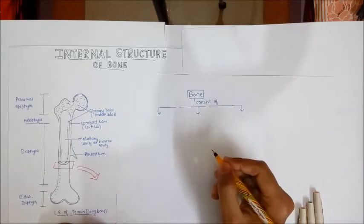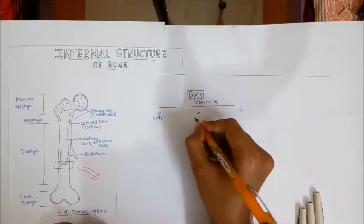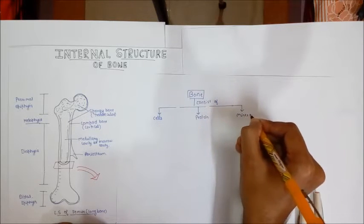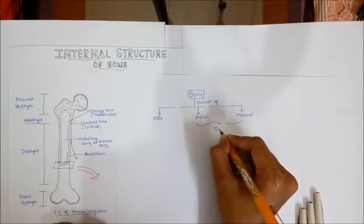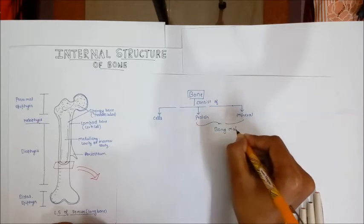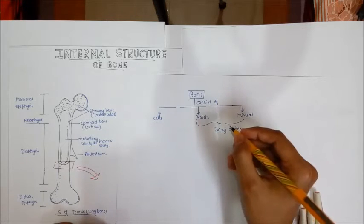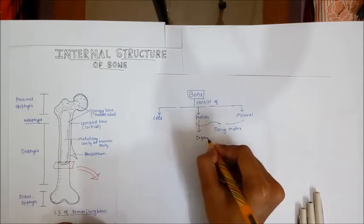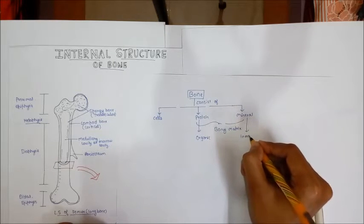Bone consists of three things: bone cells, protein, and mineral. The protein and mineral together form the bony matrix — the extracellular material present outside the cells. The protein forms the organic part of the bony matrix and the mineral forms the inorganic part.